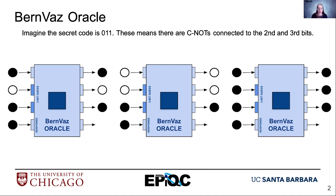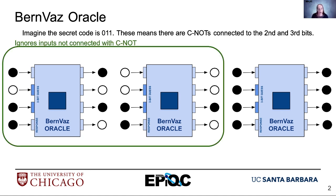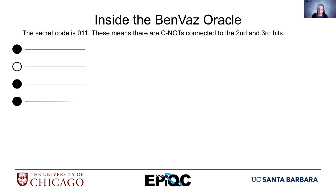Let's do the first one, the Bernstein-Vazirani. Just to remind you, if 011 is the three-bit guess, that means there are CNOTs connected to the second and third bits. Depending on how many black balls are in the second or third position — if there's only one of them, it'll flip the input; if there are two of them, the input will stay the same.